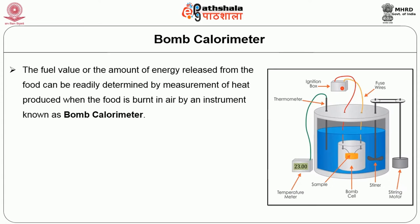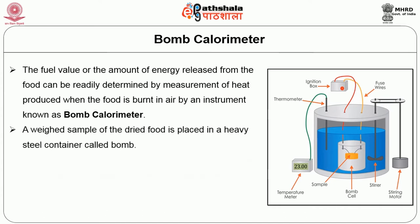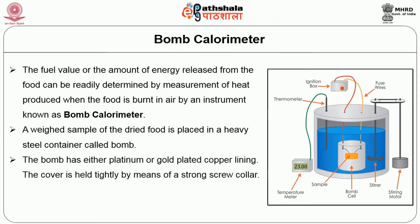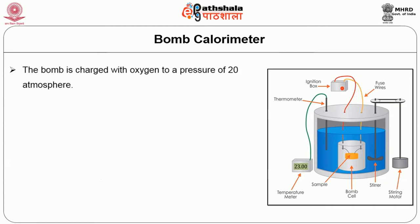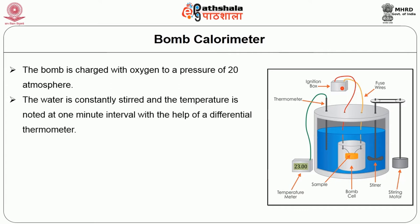Bomb calorimeter: The fuel value or the amount of energy released from food can be determined by measurement of heat produced when food is burnt in air by an instrument known as bomb calorimeter. A weighed sample of dried food is placed in a heavy steel container called bomb, which has either platinum or gold-plated copper lining. The cover is held tightly by a strong screw collar. The bomb is placed in a well-insulated vessel surrounded by a known volume of water and charged with oxygen to a pressure of 20 atmospheres.